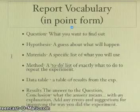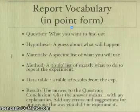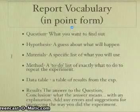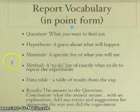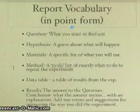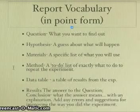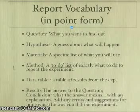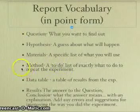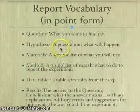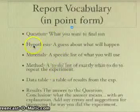The purpose of listing this and of doing the method, which is next, is so that someone else could repeat exactly what you did and hopefully get exactly the same results that you did. The method is just a to-do list of exactly what you need to do to repeat the experiment exactly the way you did. It's listed in point form, which is what this list is in. Point form just means that you don't use full sentences and you put them in a list.